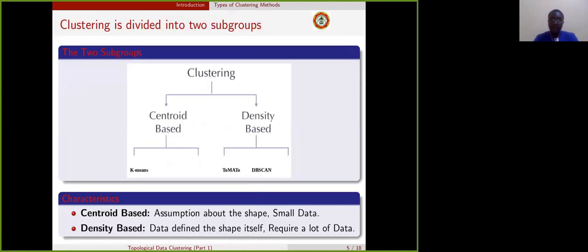Broadly speaking, clustering is divided into two subgroups: centroid-based clustering and density-based clustering. In centroid-based clustering, an assumption is made about the shape of the data and this works well when we are dealing with small data. An example of centroid-based clustering is k-means. You can see that k is the number of clusters which is set when we are running the algorithm.